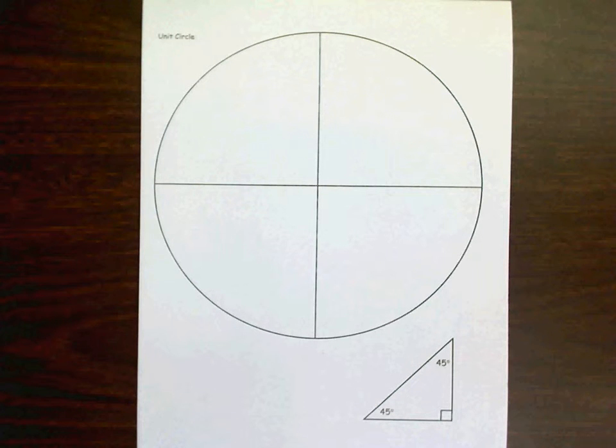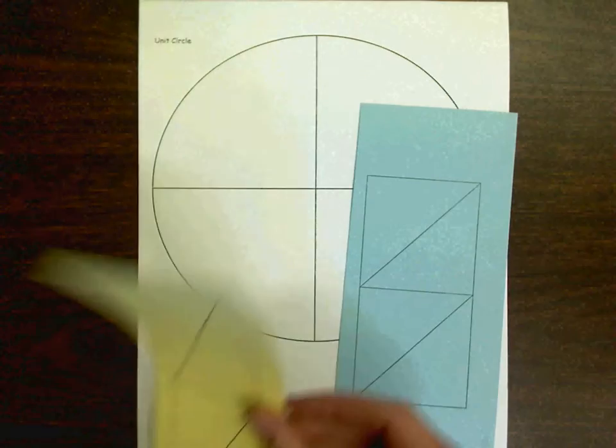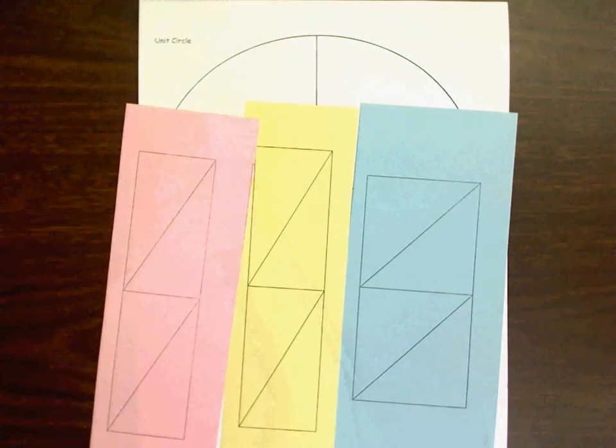To construct this unit circle that will become your best friend for the next month and a half or so of class, you're going to need the white unit circle paper that I handed out. You will also need the three strips of colored triangles, the blue ones, the yellow ones, and the pink ones that were paper clipped to the unit circle.